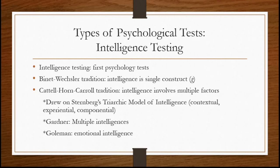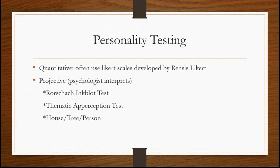Another type of psychological testing is personality testing. There are a couple of different types of personality tests. There are quantitative personality tests, which often use Likert scales or some other numerical system for evaluating a person's personality. Probably the most famous quantitative personality test is the Minnesota Multiphasic Personality Inventory, or the MMPI, now in its second edition. There's also the MMPI-A for adolescents.